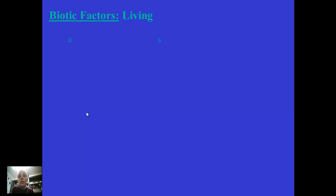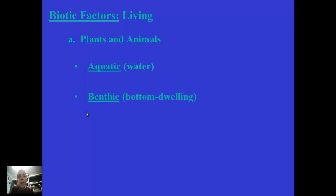Let's talk about some of the biotic or living factors — the plants and animals. There are aquatic plants and animals, meaning that they live in the water. There are benthic organisms, which are bottom-dwellers — the halibut I showed you earlier are benthic organisms that live on the bottom of the Bay. And then there are the terrestrial, or land-dwelling, organisms such as you and me, many birds, squirrels, deer, etc.